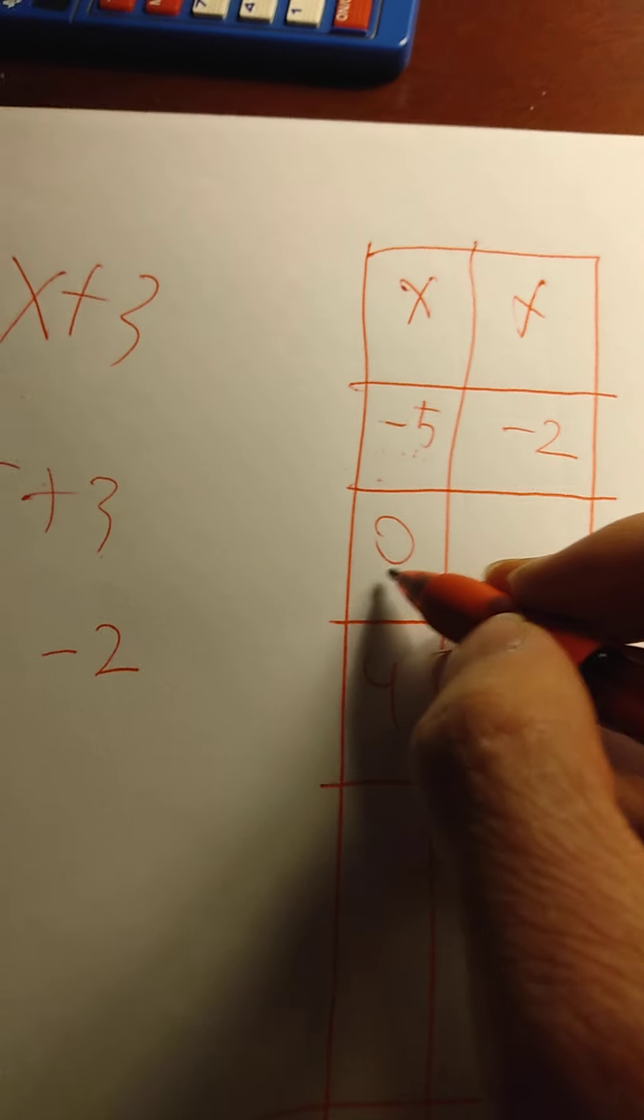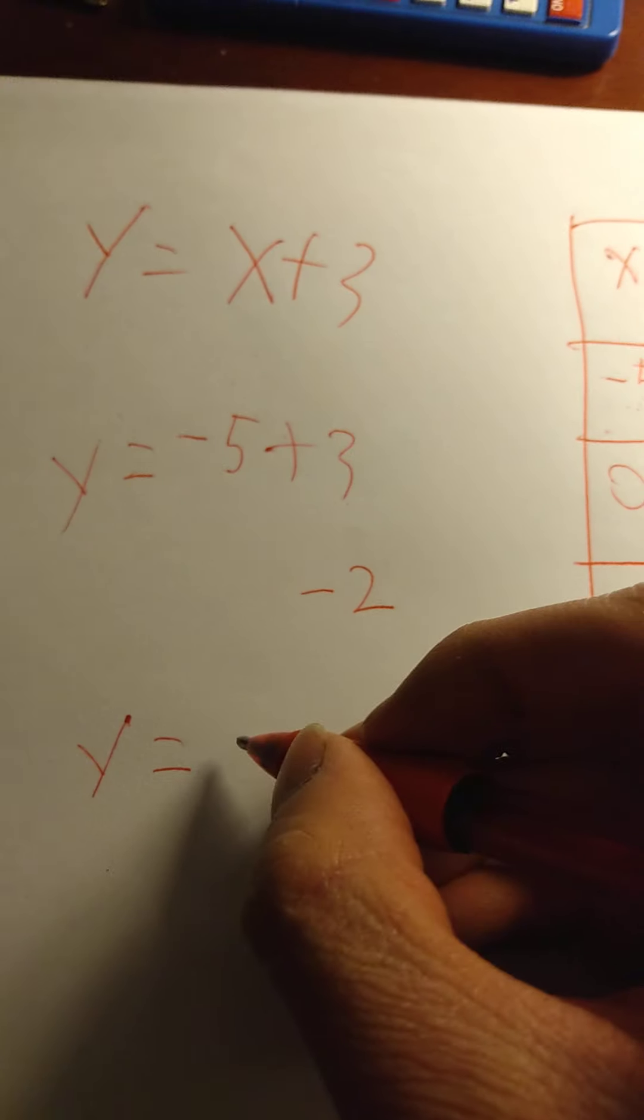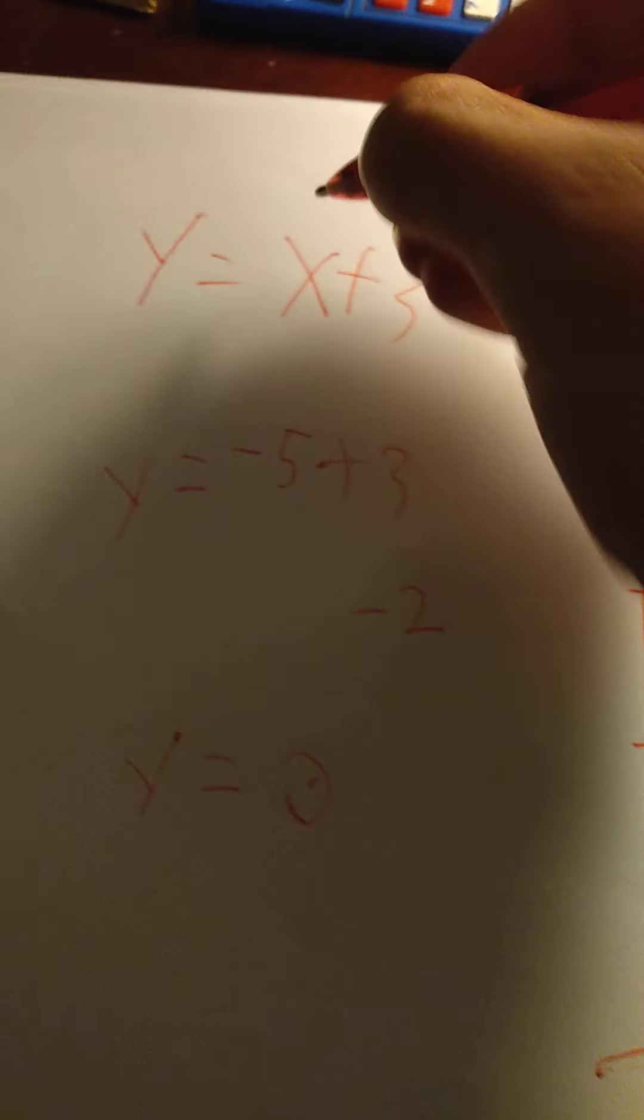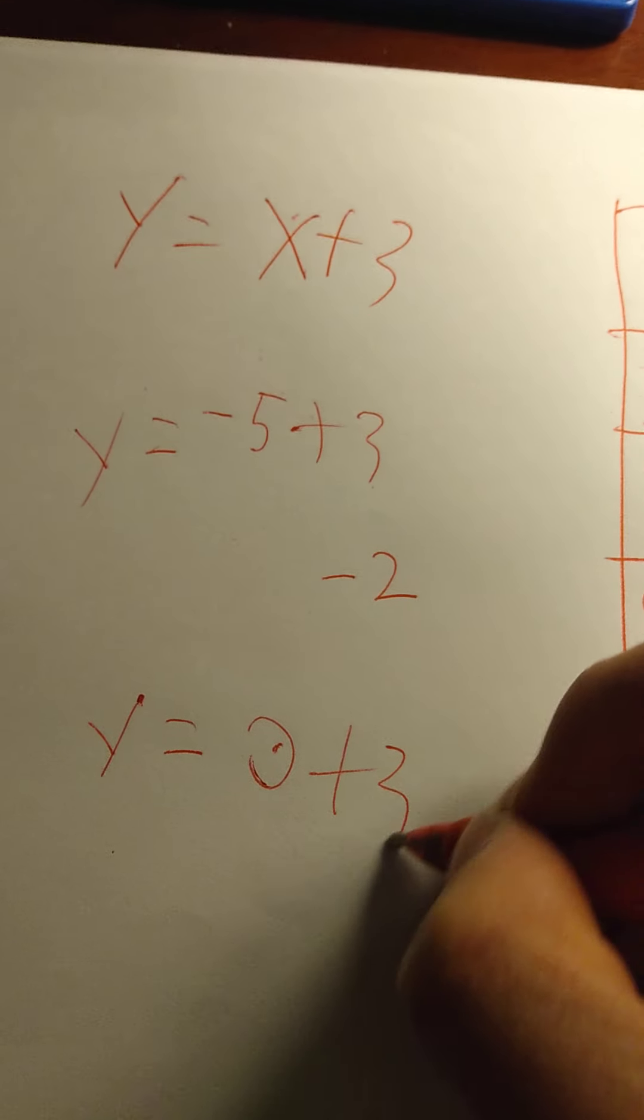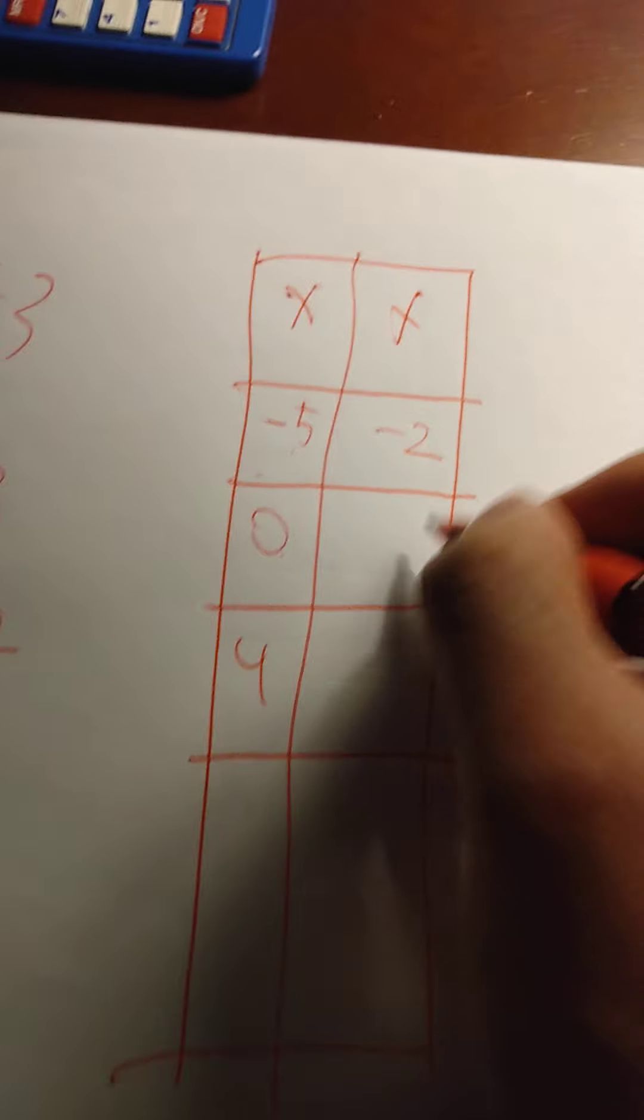What if we do this one? x equals 0. If y equals 0, because 0 is in for x, plus 3. Just 0 plus 3, that would just be 3.